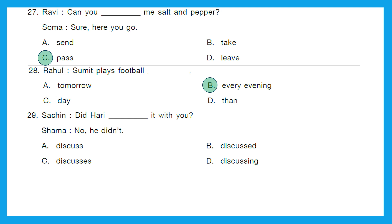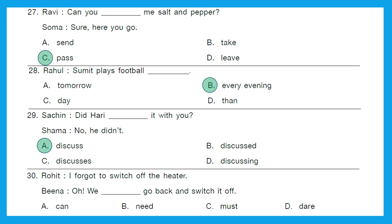Question 29 — Sachin: 'Did Hari dash it with you?' Shama: 'No, he didn't.' The answer is 'discuss,' option A: 'Did Hari discuss it with you?' We have already used 'did' as a past form, so we use the basic form of the verb after that. Question 30 — Rohit: 'I forgot to switch off the heater.' Beena: 'Oh, we dash go back and switch it off.' The answer is 'must': 'We must go back and switch it off.' Option C is the right answer.